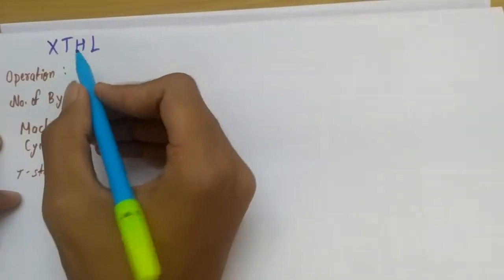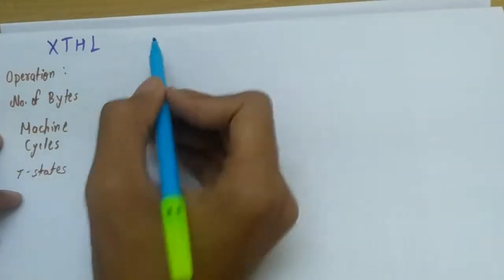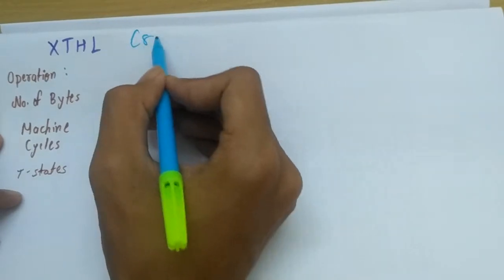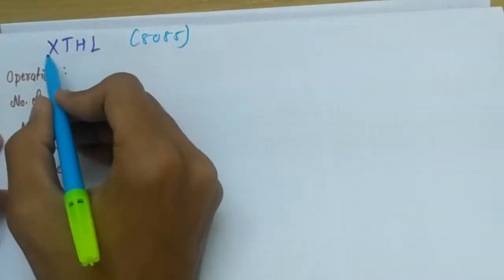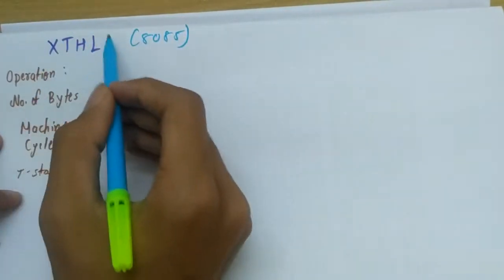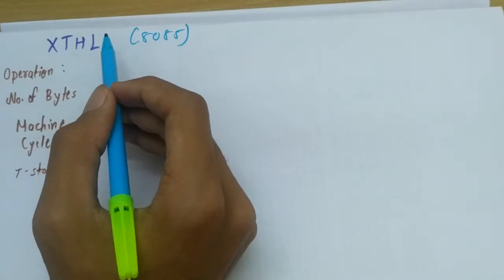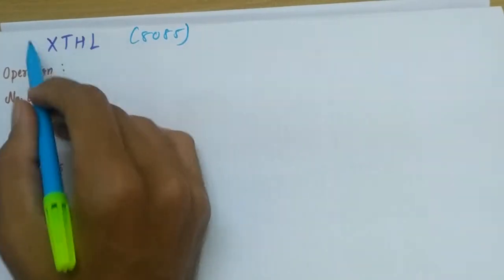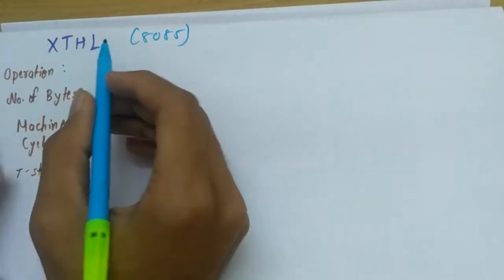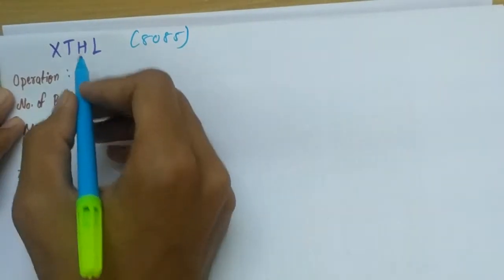Hello, in this video we will be discussing one instruction of the 8085 processor, and the instruction is XTHL. It is of implied addressing mode, so it just has the mnemonic XTHL. Now what is the operation, what does it do?